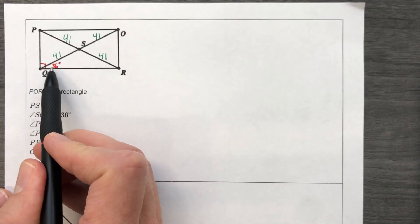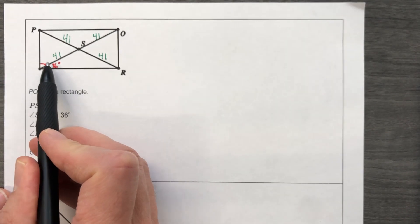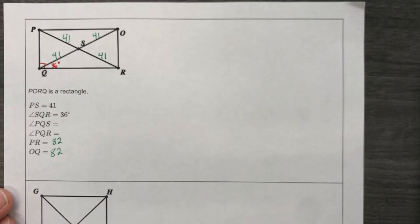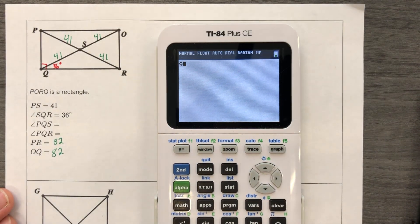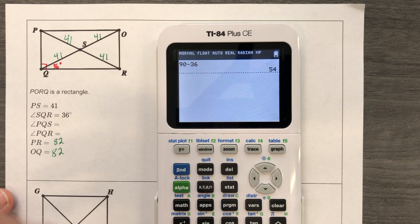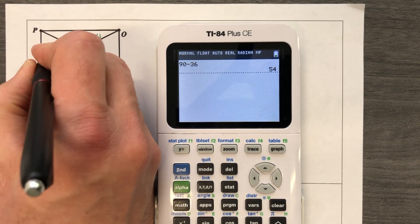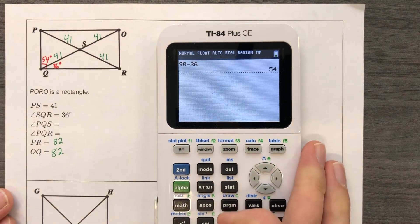That's 90, which means that this 36-degree angle and this angle are complementary, which means they add up to 90. So, 90 minus 36 is going to give me the 54-degree angle here. I could do that in my head. Just wanted to give you a visual for it.